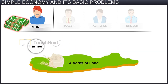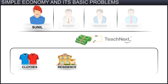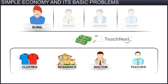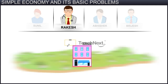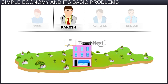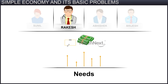This money is used by him to satisfy his other wants, like clothing, a residence, services of doctors, teachers, and so forth. Rakesh, who is a doctor, has his own clinic in the village, where he treats patients to earn money. Rakesh also uses the money earned to satisfy his needs.